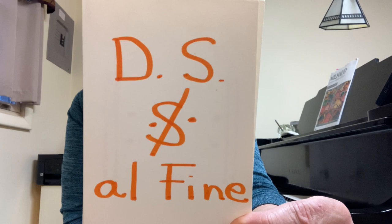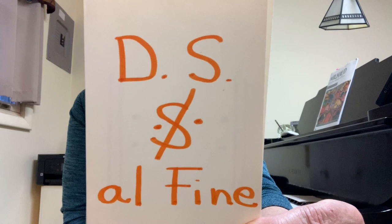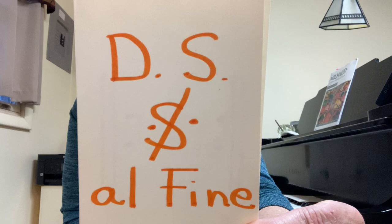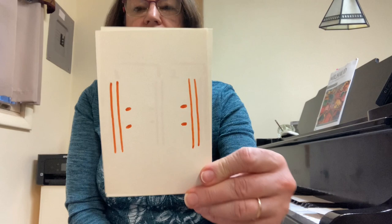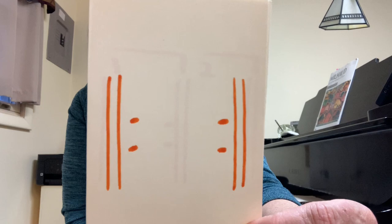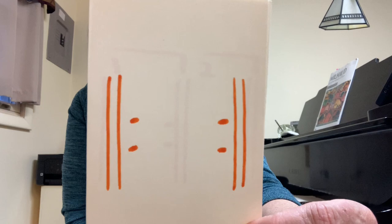One, two, three, four, five. DS al fine — go back to that fancy-looking S sign and play until you see the word fine. One, two, three, four, five. Repeat signs — repeat whatever music happens between these signs.